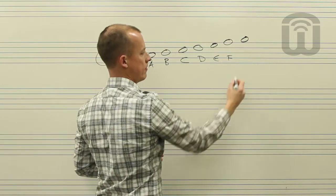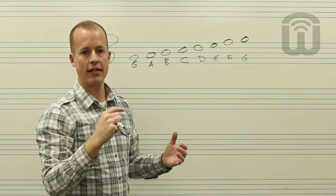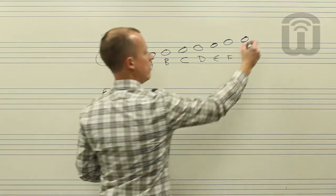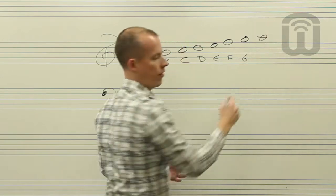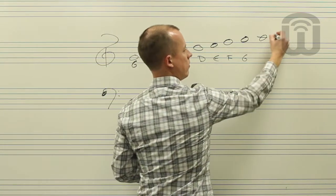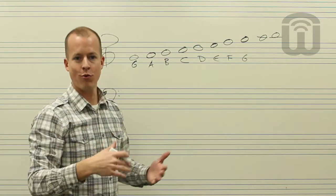From there the next note up is going to be above the fifth line, that's G, and then we've run out of lines so we need to start adding extra lines called ledger lines for extra high or extra low notes. So the note on the first ledger line is A, and then we go above the first ledger line and that's B. And from there we just keep adding more and more ledger lines for as many as we need.